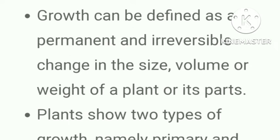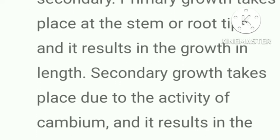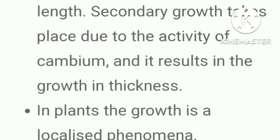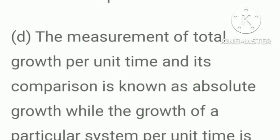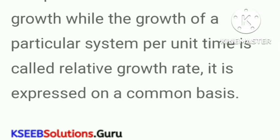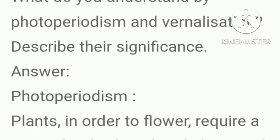Growth can be defined as a permanent and irreversible change in size, volume or weight of a plant or its parts. Plants show primary and secondary growth: primary growth at the stem or root tips results in growth in length; secondary growth due to cambium activity results in growth in thickness. Absolute growth is the measurement of total growth per unit time; relative growth rate is growth of a particular system per unit expressed on a common basis.